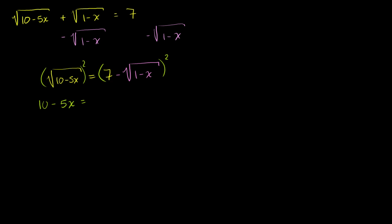You just have to remember that (a + b)² equals a² plus 2ab plus b². You don't even have to remember it — you could multiply it out if you forget. Here, a is 7 and b is negative the square root of 1 minus x.